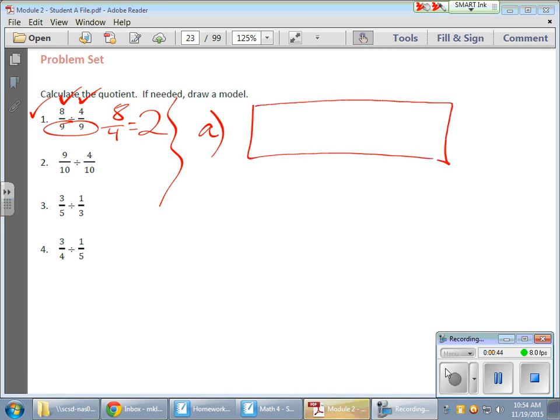So if I have 8 ninths, let me draw that out: 1, 2, 3, 4, 5, 6, 7. There are 9 pieces right there, and I need 8 of them: 1, 2, 3, 4, 5, 6, 7, 8.